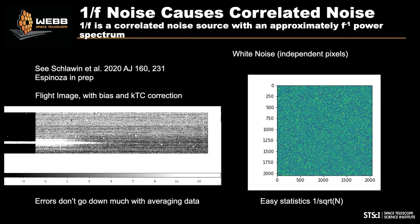This 1/f noise was something we knew about going in — there are a couple of papers on 1/f noise and correlations across the fast read direction. This noise source creates stripes and banding structures across the fast read direction, shown on the left for real data versus on the right for ideal white noise where every pixel is independent. You need to be aware that there can be correlations across wavelengths from this noise.